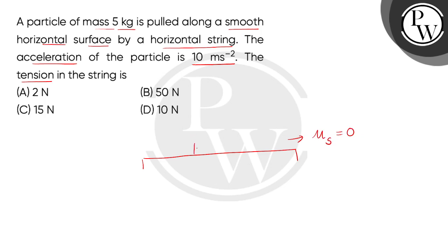Now there is a particle with mass 5 kg, and children, it is pulled along a horizontal string like this. Now if the acceleration of this particle is given, we have 10 meter per second square.